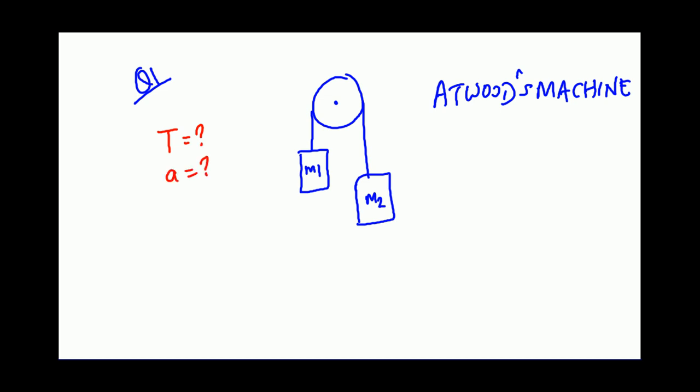Let's assume that the acceleration of M1 is vertically up. So what is tension and what is acceleration?